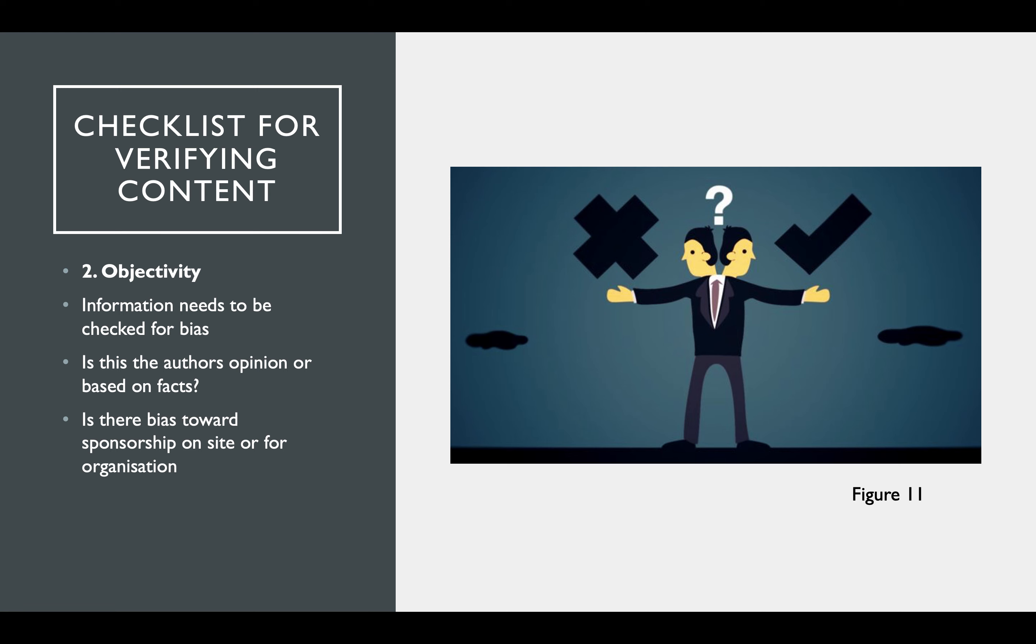Secondly is objectivity. Check if there is any bias, that the author is just trying to push one idea to you. That usually means this is not a research paper or blog or website, but it's more opinion-based. So just make sure that there is no bias towards any sponsorship on the site or organization, and it's reflecting both sides of the argument.